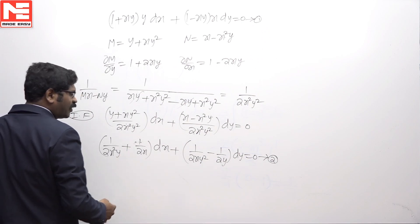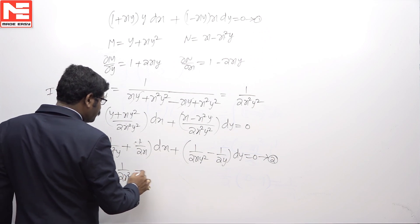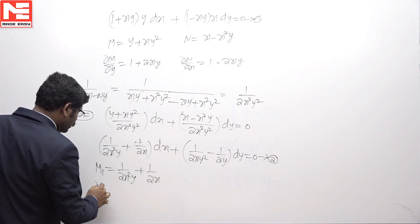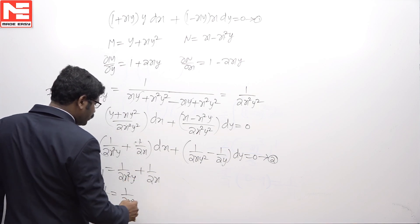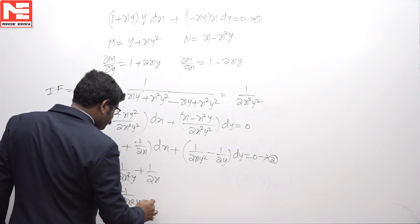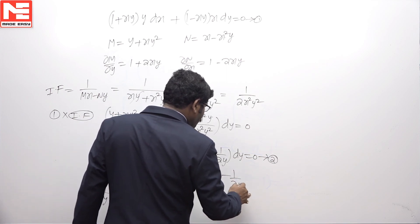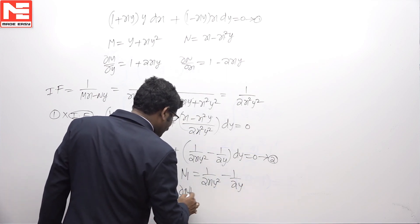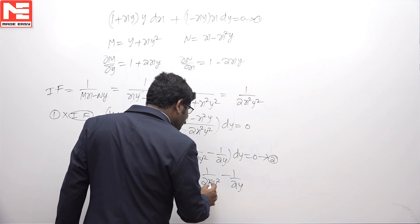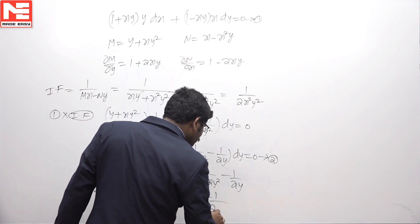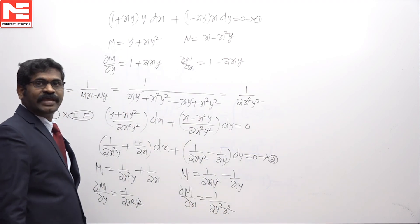Here I am verifying whether this new equation is exact or not. M1 = 1/(2x²y) + 1/(2x), so del M1 by del y = -1/(2x²y²). N1 = 1/(2xy) - 1/(2y), and del N1 by del x = -1/(2x²y). Both are equal, therefore the equation is exact.